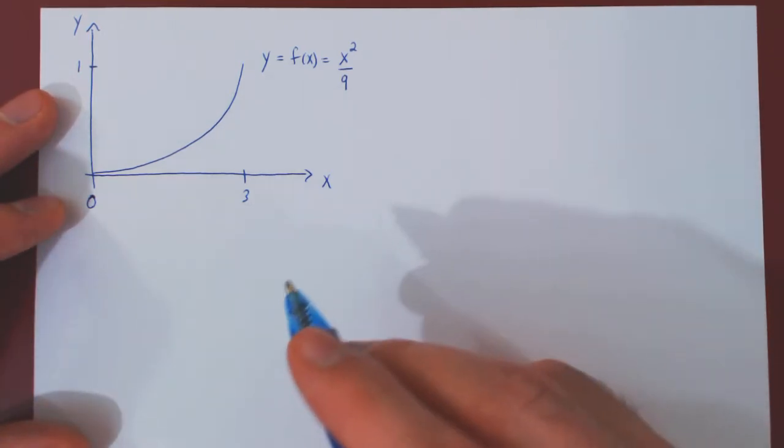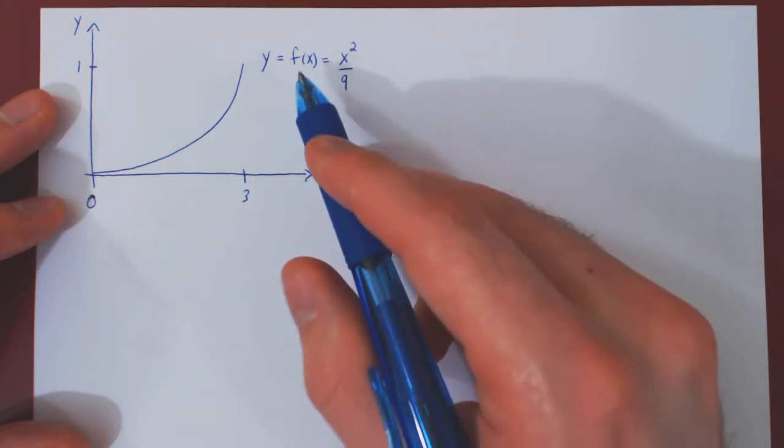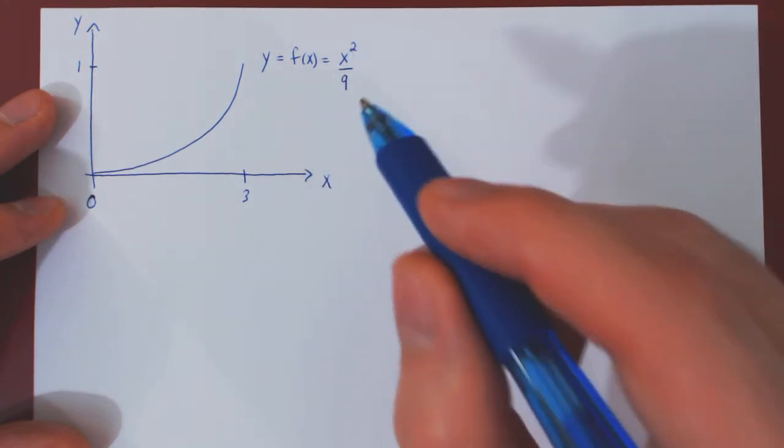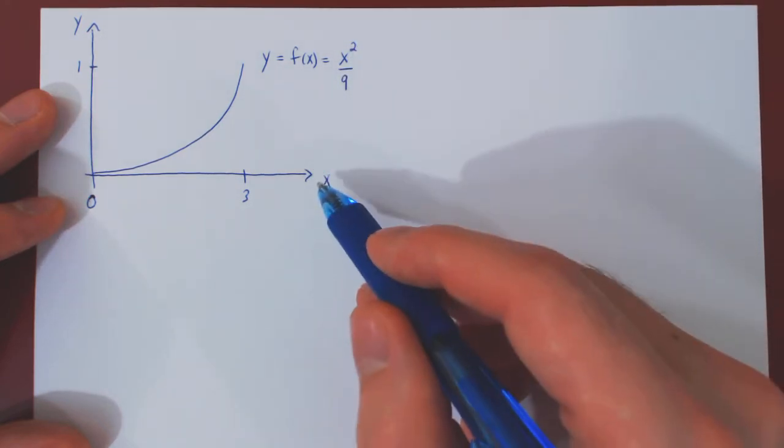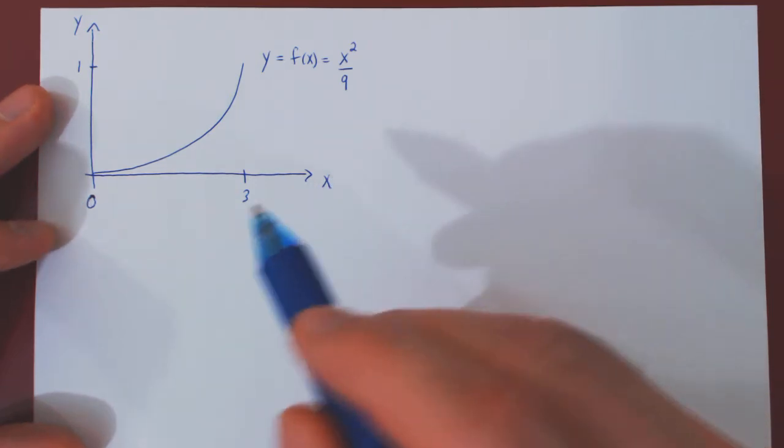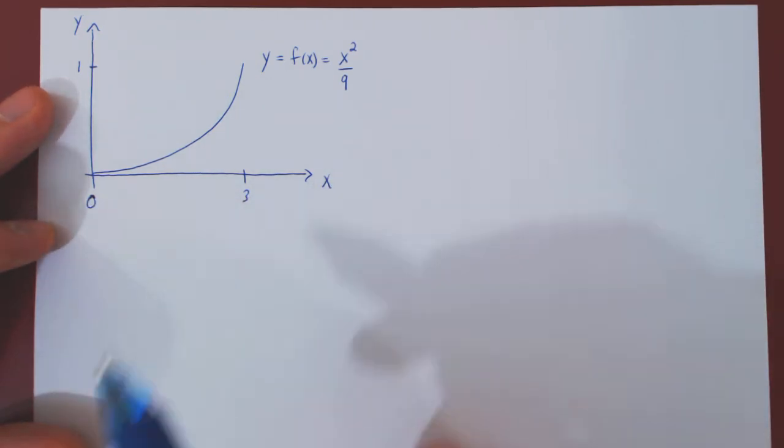So if you recall in the previous video, we proved that the function x squared over 9 is a probability density function for the random variable x over the interval from 0 to 3.